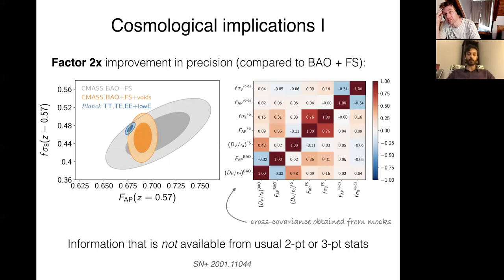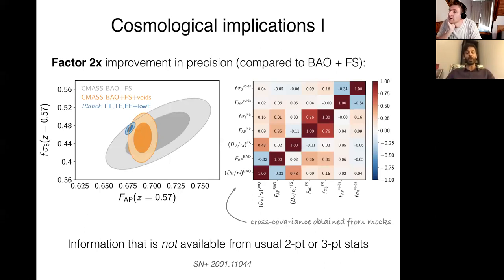A clarification: at some points in these slides I use the shorthand notation FS, which stands for full shape — the full shape of the galaxy power spectrum. This means the same thing as doing an RSD analysis. In the literature, full shape and RSD are sometimes used interchangeably.